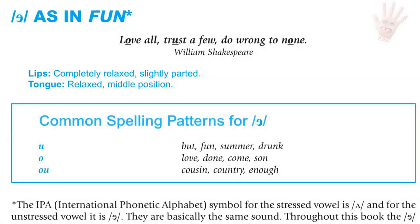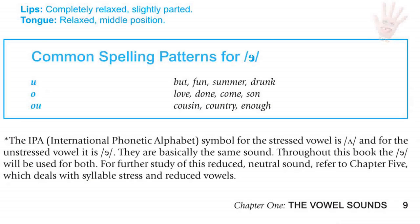U as in fun. For the U sound, the lips are completely relaxed and just slightly parted. The tongue is also very relaxed and in the middle position. Common spelling patterns: the letter U as in but, fun, summer, drunk; the letter O as in love, done, come, son; and the letters OU as in cousin, country, and enough.